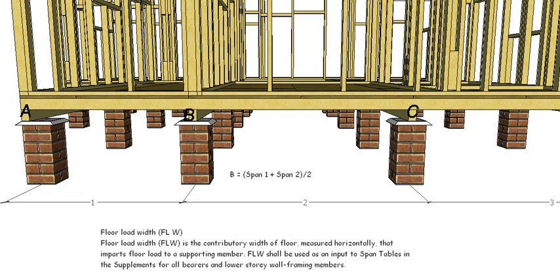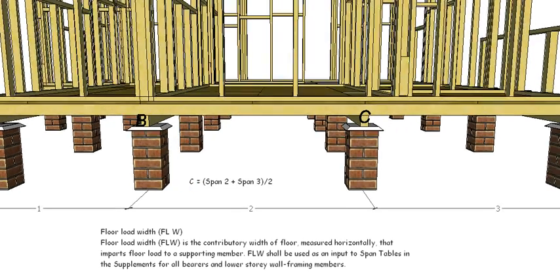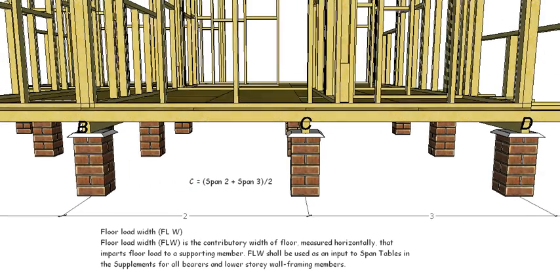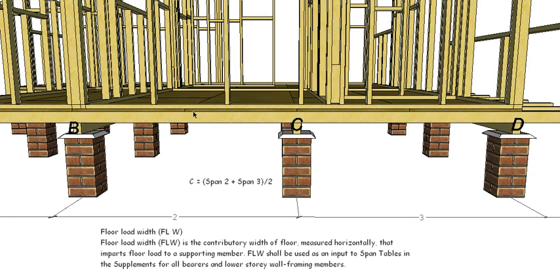Pier C is going to be pretty much the same situation — it's carrying half of this load and half of this load. So it's span 2 plus span 3, divided by 2.